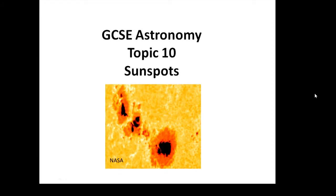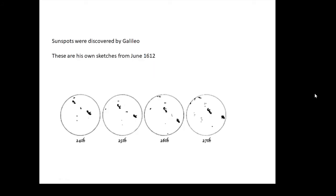GCSE astronomy topic 10: sunspots. We need to know stuff about sunspots. Now sunspots were actually discovered by Galileo and he took some sketches of sunspots moving across the surface of the sun. Interesting, he did end up blind when he was in house arrest for the last few years of his life. He was blind. I wonder why.